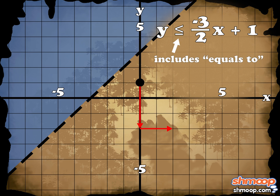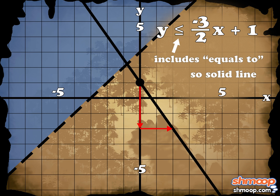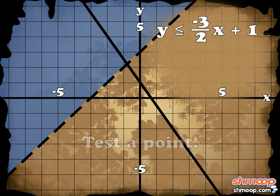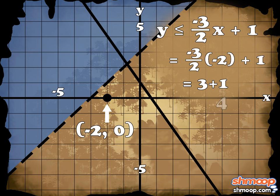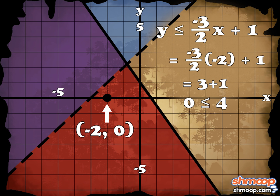Since the inequality includes equals, we know the line will be solid. To see which side of the line we should shade for the inequality, we can test a point on one side of the line — for example, negative 2 comma 0. If we plug in negative 2 for x, we get that negative 3 halves times negative 2 equals 3. 3 plus 1 is 4. Since our original y-value of 0 is less than 4, we know we can shade the lower half of the line.